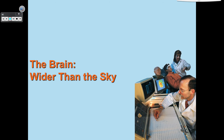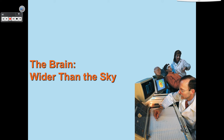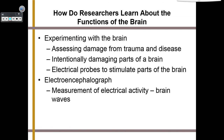Neurons are just the basic building blocks — the bricks. Now let's talk about the brain. When we research the brain, there are many ways we learn about how it functions: assessing damage from trauma or disease, intentionally damaging parts of the brain, or using electrical probes to stimulate it. We use an electroencephalograph, or EEG machine, which measures electrical activity. We also use brain imaging techniques like a computerized axial tomography or CAT scan, positron emission tomography or PET scan, magnetic resonance imaging or MRI, and functional magnetic resonance imaging or fMRI.